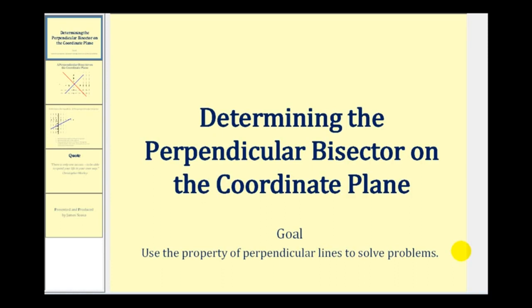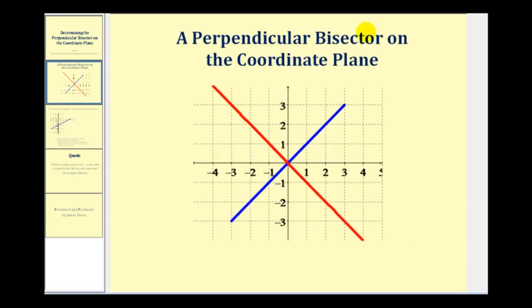Welcome to a lesson on determining the perpendicular bisector of a segment on the coordinate plane. Here we see a red perpendicular bisector of the blue segment on the coordinate plane. Remember that tells us two things. First, this red line cuts a segment into two congruent segments, or two segments that have the same length. So this segment here is the same length as this segment here. The second thing is that the intersection of the line and the segment form a right angle, so this angle right here measures 90 degrees.